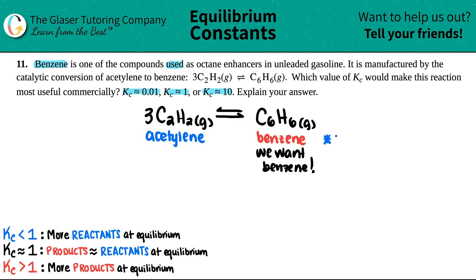So I'm going to say that you want more products. At the end of the day, when you're coming to equilibrium, you want more of the products. You want more of the benzene than acetylene because we're going to use the benzene as the octane enhancer, not the acetylene. So maybe I'll just say more products at equilibrium because that's what really matters here.